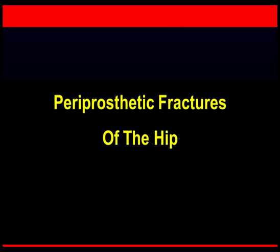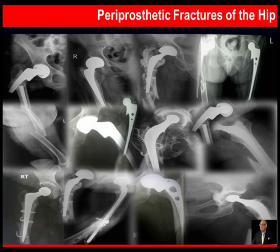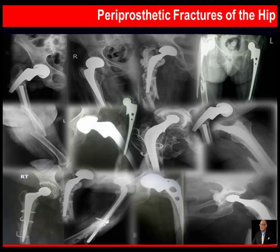Periprosthetic fractures are indeed a very challenging problem, and this is largely because these patients are elderly and have multiple comorbid conditions. Apart from that, there is a presence of an implant which may or may not be loose, and the underlying bone itself may be having severe osteoporosis or osteolysis, making treatment a very difficult and challenging problem.